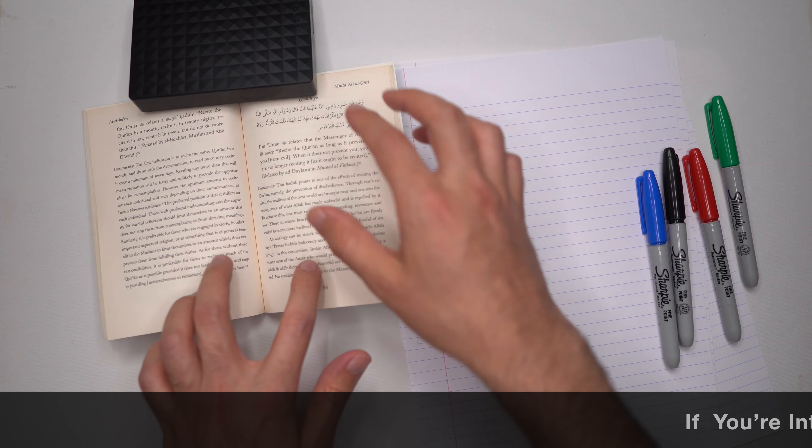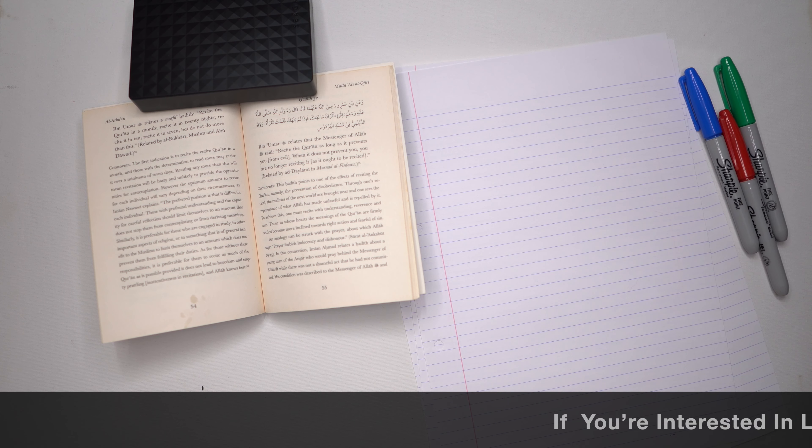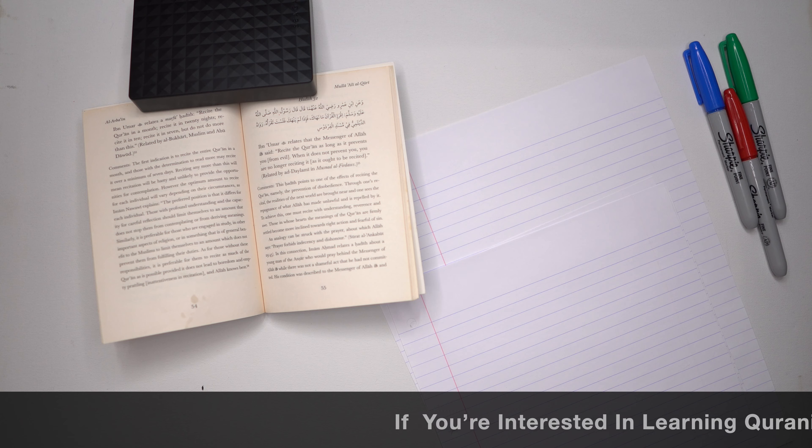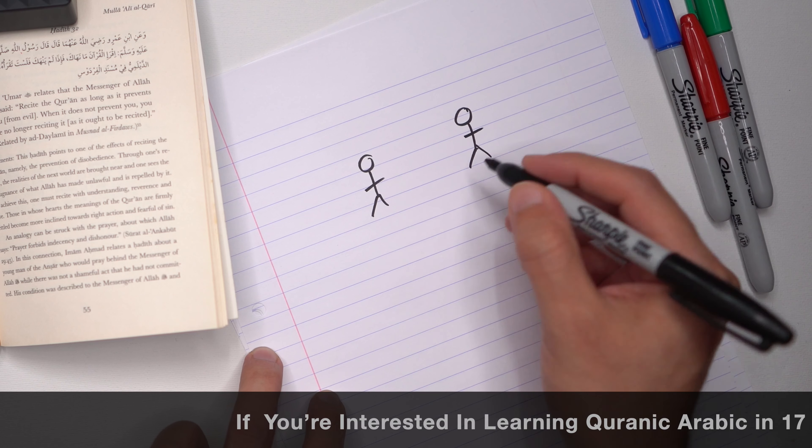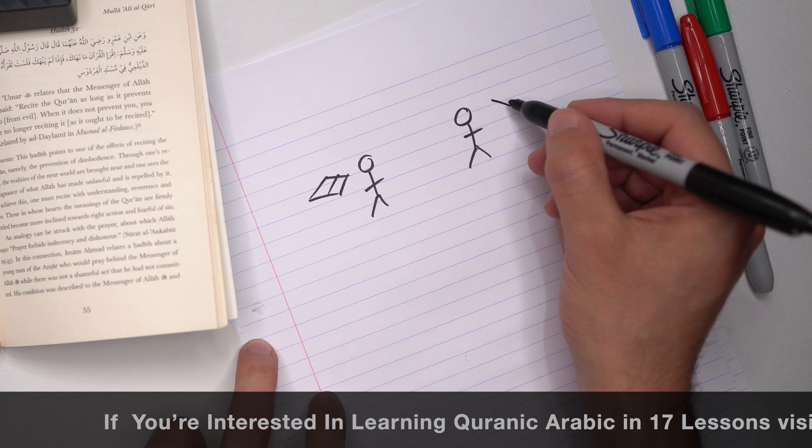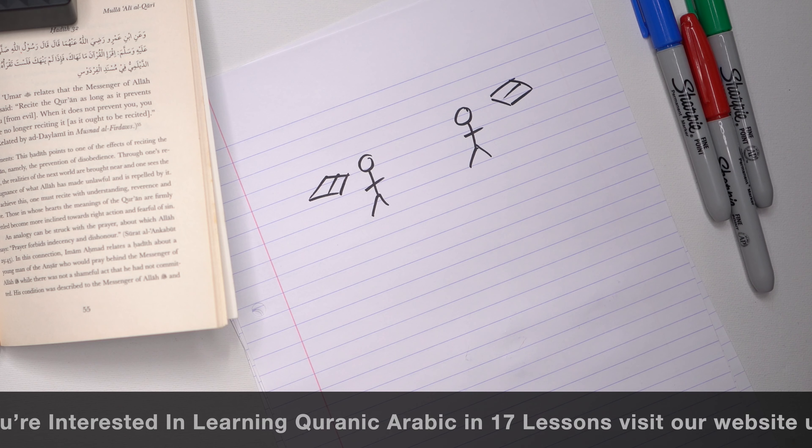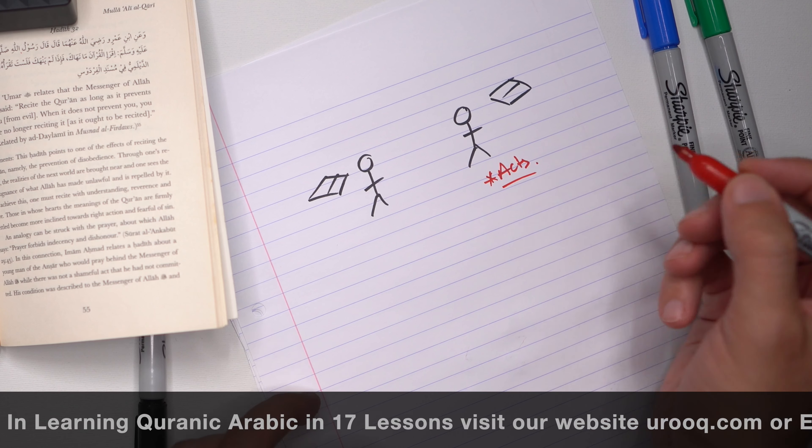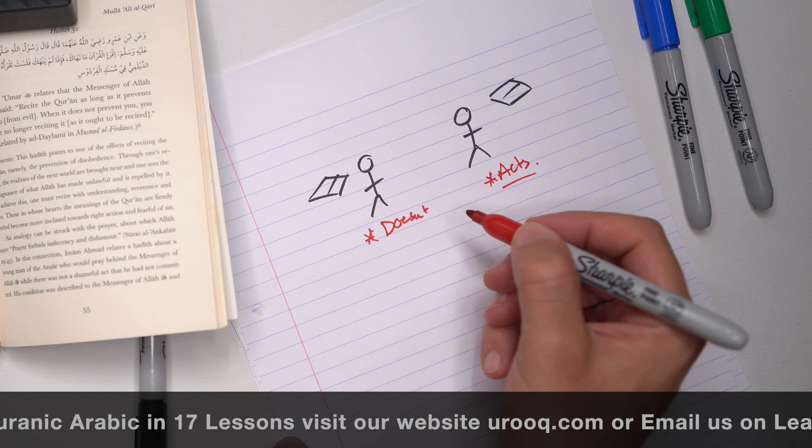This hadith is talking about the concept of true recitation of Qur'an. Imagine, for instance, there are two people, and both of them are reading the Qur'an. He reads the Qur'an and he also reads the Qur'an. Both of them are reading the Qur'an. The difference being is that this guy over here actually practices, he acts on the Qur'an, whereas this guy he doesn't act.